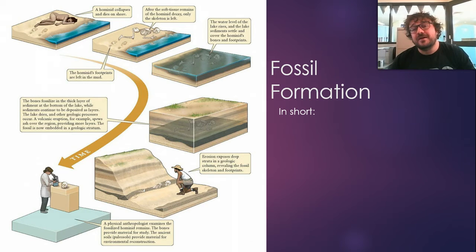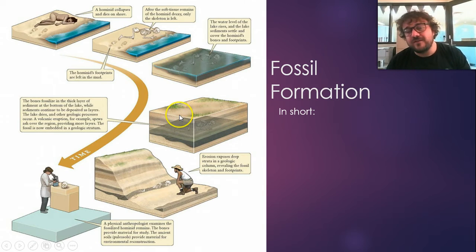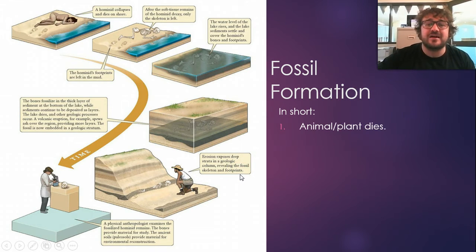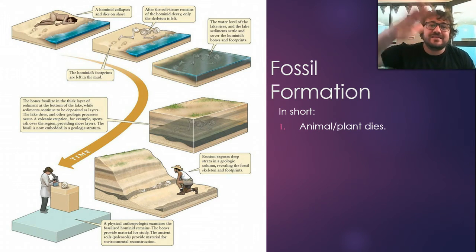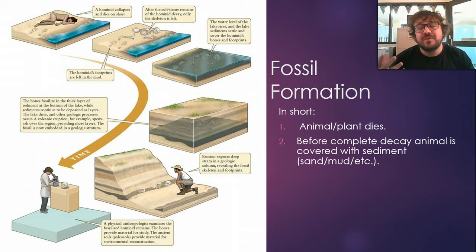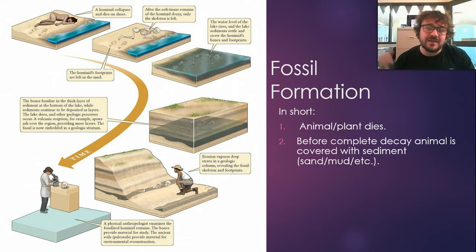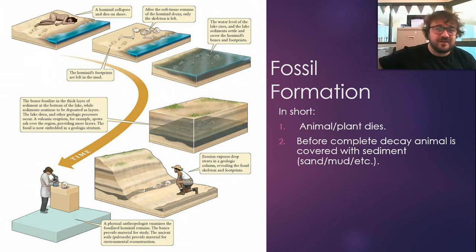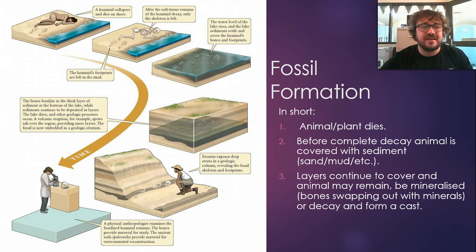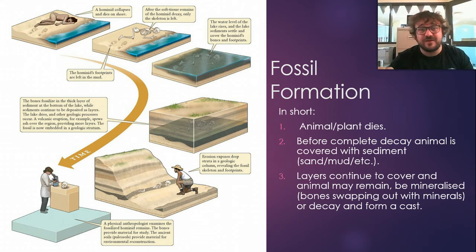So how are fossils made? Essentially, the animal or plant dies — it lays down, the soft tissue decays. But before it can completely decay, usually when you've got skeletons left over, the hard stuff which is resistant to decay gets covered with sand, mud, or some kind of sediment. This then gets compacted down, turns into a cement, solidifies, and layers go on top.